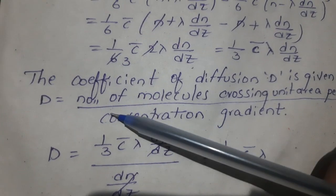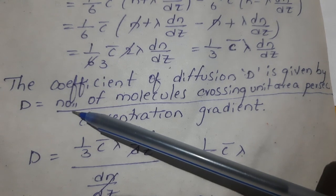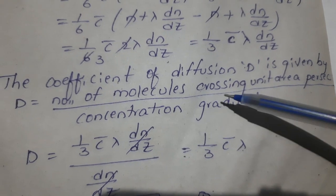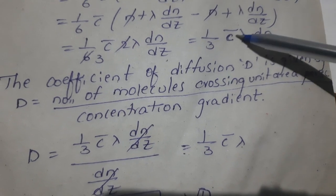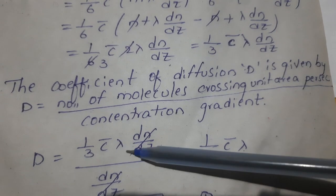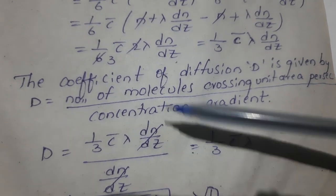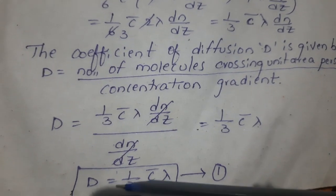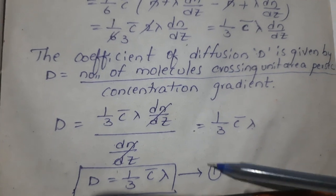Now substituting into the expression for diffusion coefficient: the coefficient of diffusion D equals the number of molecules crossing unit area per second divided by the concentration gradient dn by dz. Therefore D equals 1 by 3 c-bar lambda. This is equation number one.